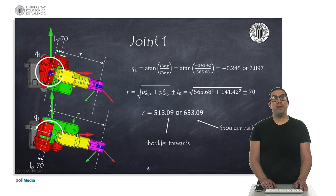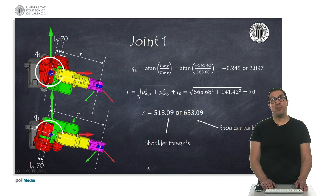Well, now in order to compute the value of q1, we need to project the wrist point onto the xy plane. The arctangent of the projected coordinates provides the value of the first joint. As you can see there are two possible solutions, one corresponding to the shoulder of the robot pointing forwards, while the other points backwards.